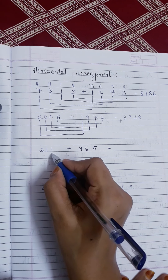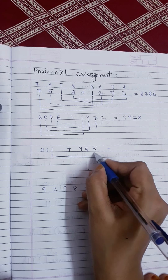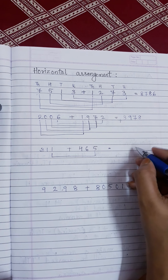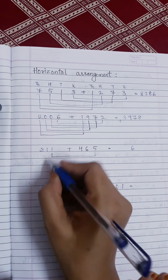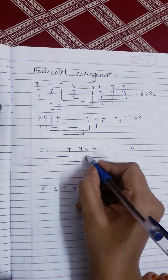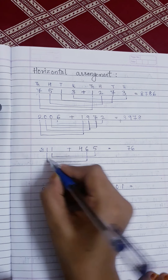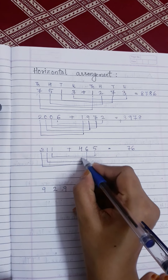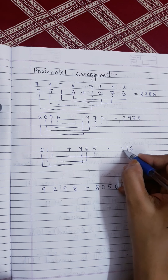Similarly, unit to unit: one plus five is six. Again, one plus six is seven. Three plus four is seven.